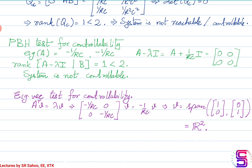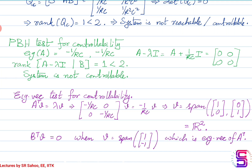We can also apply the eigenvector test for controllability. The eigenvectors of A transpose span the entire R2 space — all vectors in R2 are eigenvectors. Picking any vector in the span of [1, 1], there is at least one vector that is both an eigenvector of A transpose and in the kernel of B transpose, indicating the system is not reachable and not controllable.